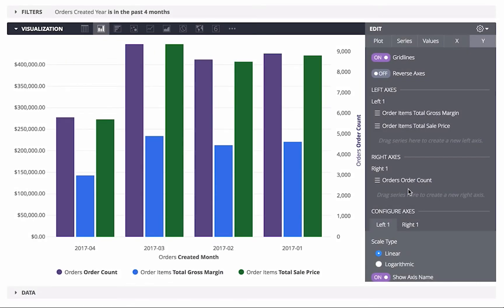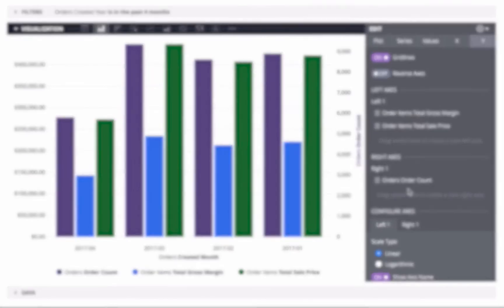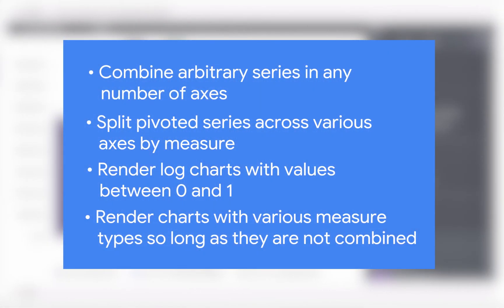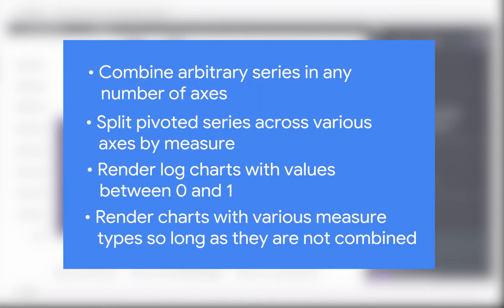Using the left-axes and right-axes settings, you can combine arbitrary series and any number of axes, split pivoted series across various axes by measure, render log charts with values between 0 and 1, and render charts with various measure types so long as they are not combined.